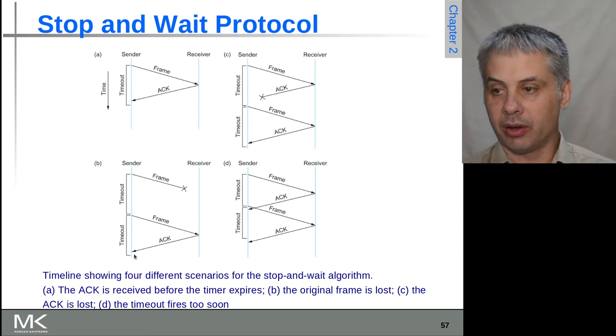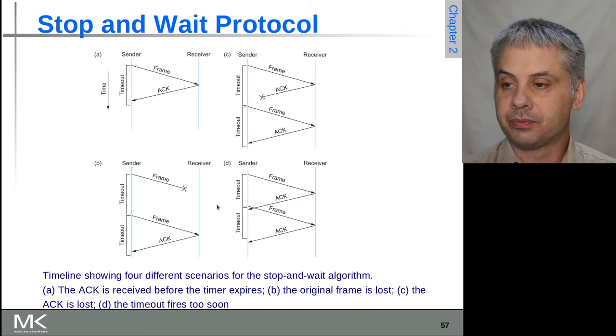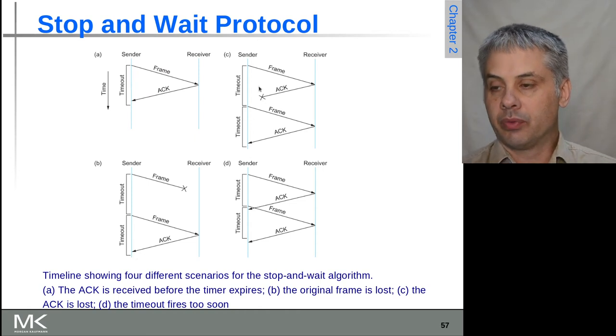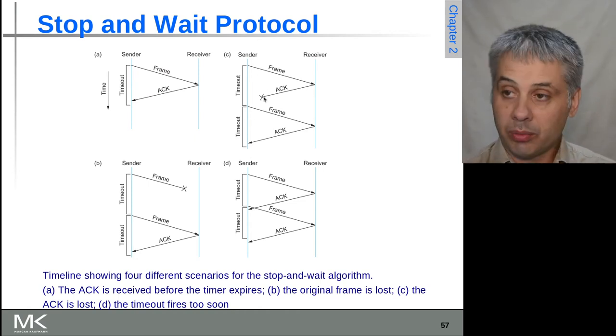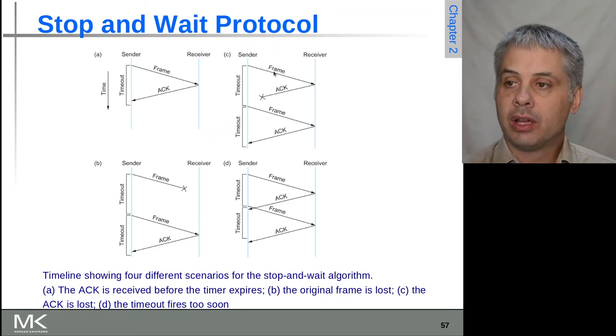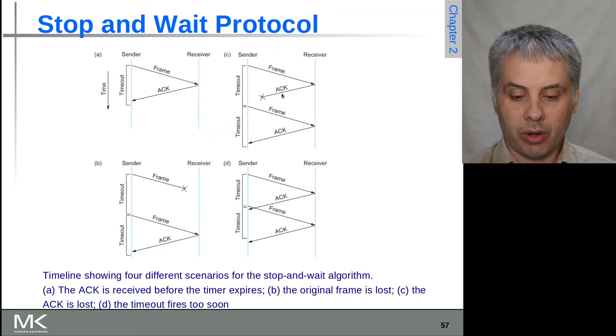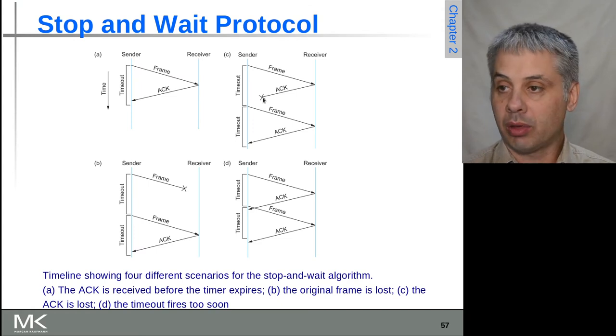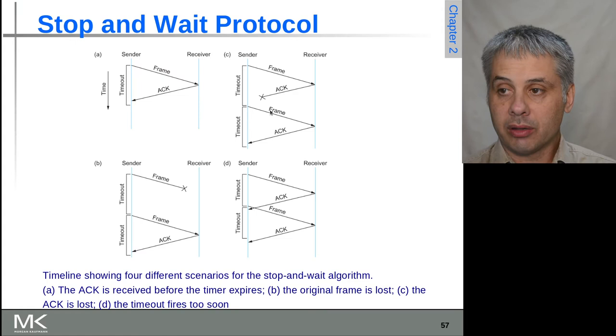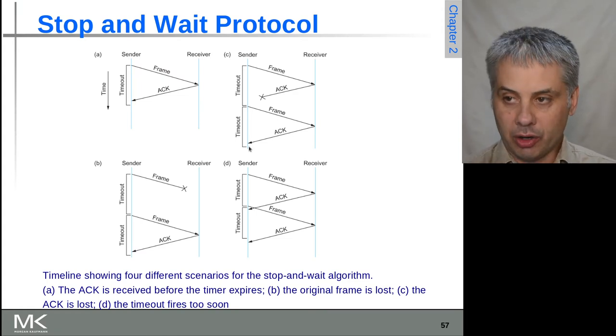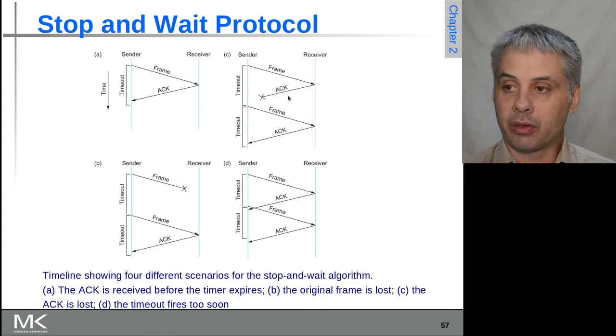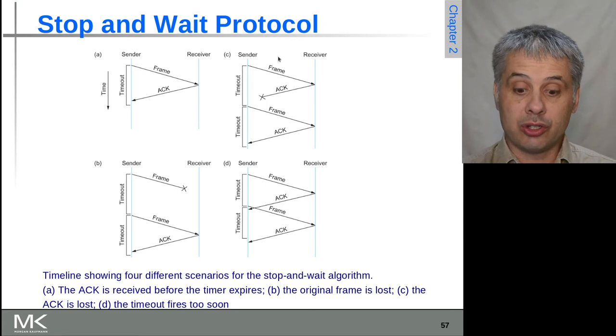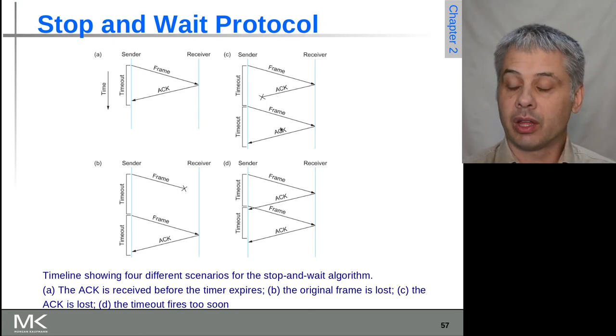Also, if the acknowledgement gets lost, the frame goes and arrives, acknowledgement starts coming back, but gets an error and gets lost on the way back. Again, we'll actually at the end of the timeout send the frame again. This time the acknowledgement comes through. The receiver has to be able to de-duplicate the duplicate frame that's been received.